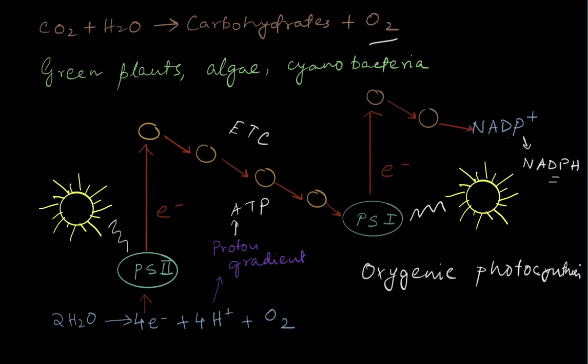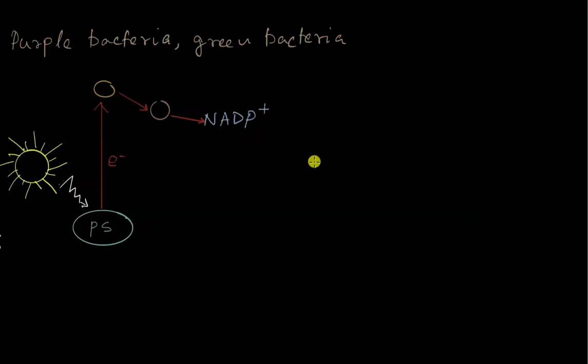Now let's see what happens in the other type of photosynthesis. The other type of photosynthesis happens in other bacteria, not in cyanobacteria but some other bacteria which are also autotrophic. For example, purple bacteria, green sulfur bacteria.